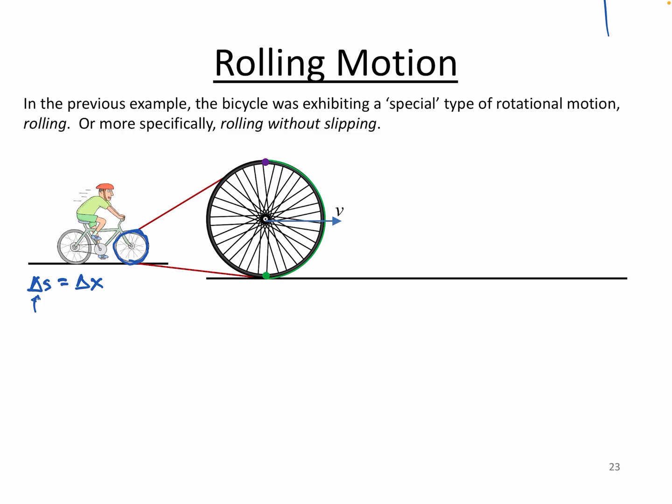This is a special condition, and one that we generally like to be in when we're on a bicycle or in a car — rolling without slipping. Visually, if you just take my front tire and imagine putting a couple of dots on it: a purple dot up here and a green dot down here, and you look at the wheel going through one half of a revolution.